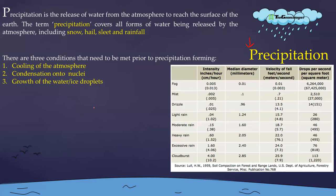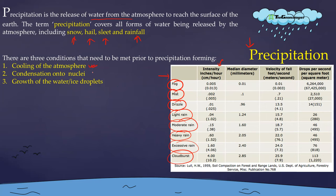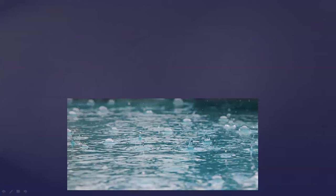The first topic is precipitation. Precipitation is the part of the hydrological cycle where water is released from the atmosphere in various forms: snow, hail, sleet, and rainfall. There are different intensity categories — fog, mist, drizzle, light rain, moderate rain, heavy rain, excessive rain, and cloudburst. Three conditions are required for precipitation: cooling of the atmosphere, condensation onto nuclei such as dust particles and aerosols, and growth of water or ice droplets.